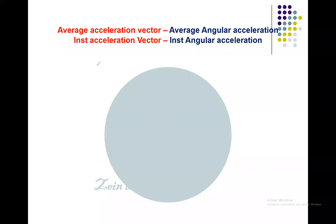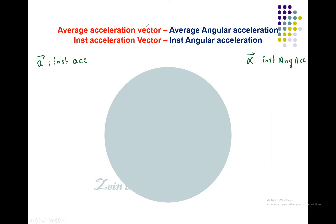Now let's talk about the acceleration. In the case of linear acceleration we talk about a, but for rotational motion we talk about alpha — the instantaneous angular acceleration. On the figure here we have x and y, and initially we have the small element at some position, with position vector r_A and its circular trajectory.